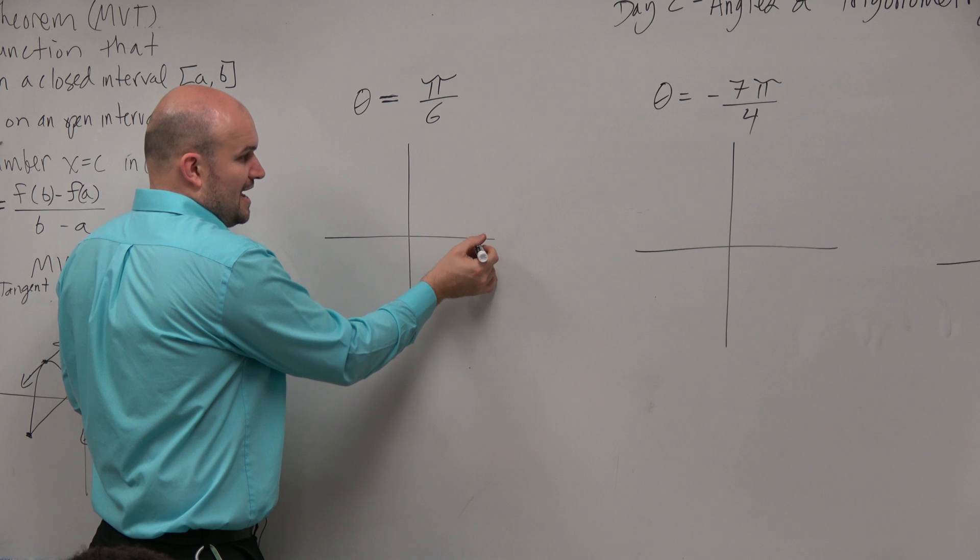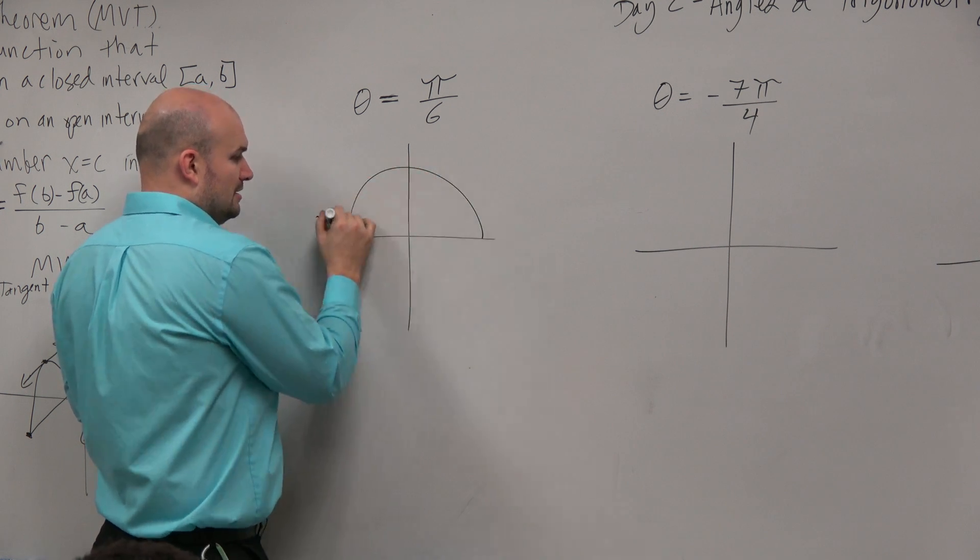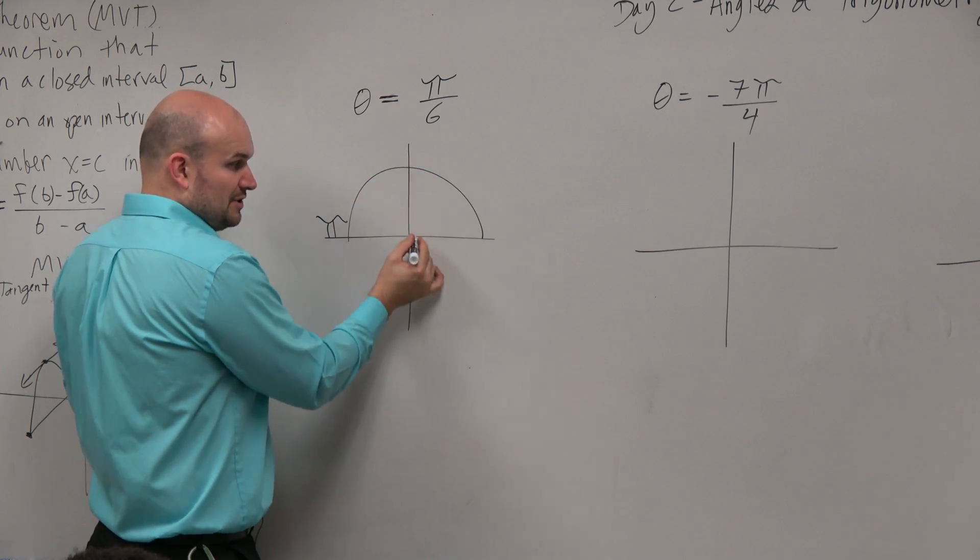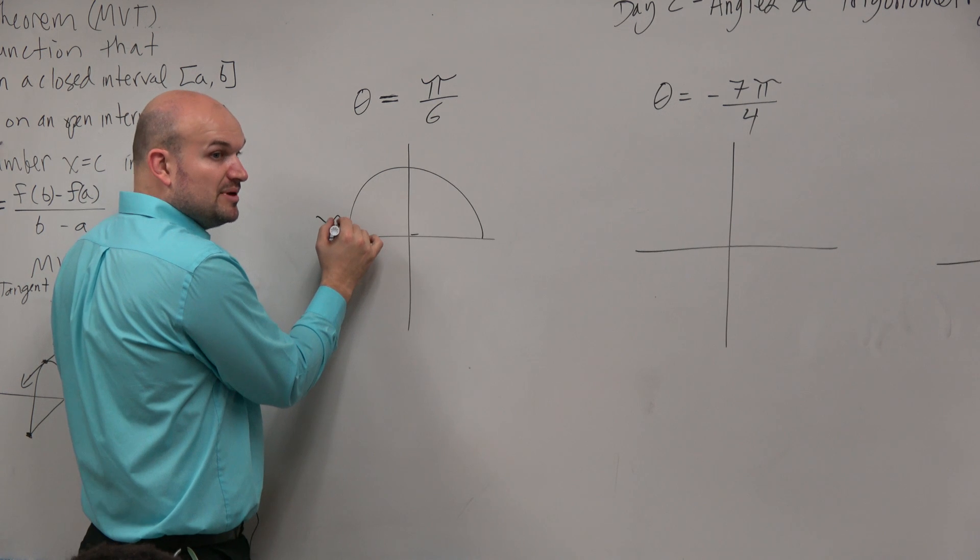We know, Lacey, that halfway around the circle is pi measurements. If we were going to draw an angle from here to here, that'd be pi.